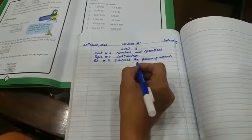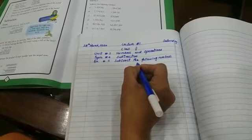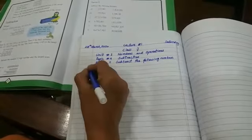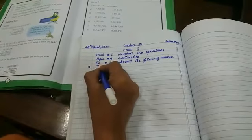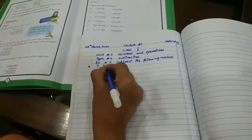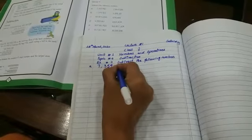Subtraction means to find the difference between two numbers. Now part A is: seven million, three hundred fifty-nine thousand, nine hundred and ten minus two million, eight hundred forty-eight thousand, five hundred and eighty-five.